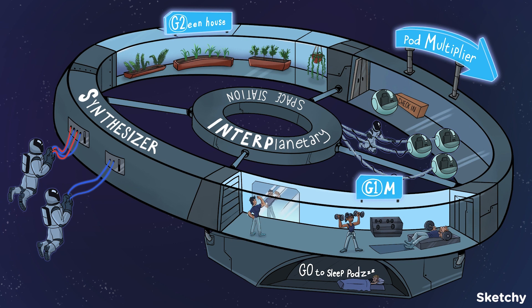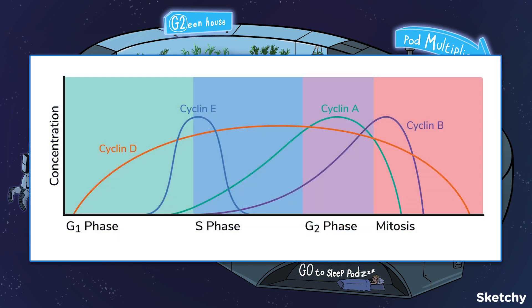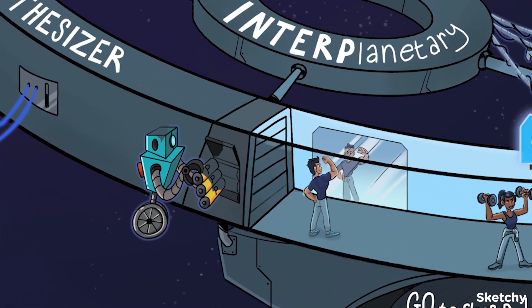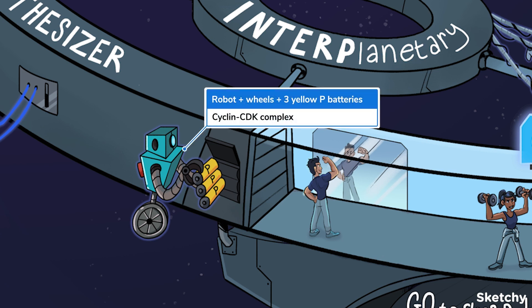Now let's look at how cell cycle regulation works at the molecular level. The main players are cyclins, cyclin-dependent kinases (CDKs), and tumor suppressor proteins. Cyclins are proteins that control progression through the cell cycle — their concentrations fluctuate cyclically depending on where we are in the cycle. CDKs are continuously expressed and specifically bind to cyclins, generating activated cyclin-CDK complexes that alter downstream proteins via phosphorylation, allowing the cell to move from one stage to the next.